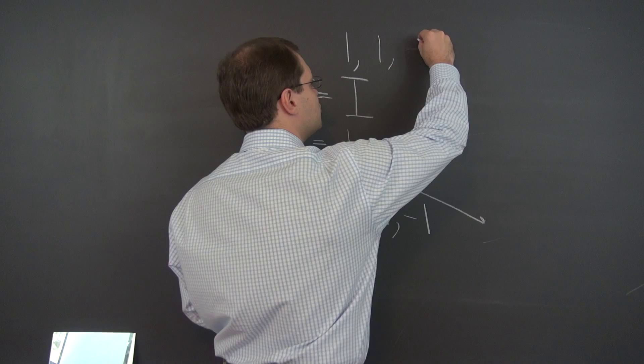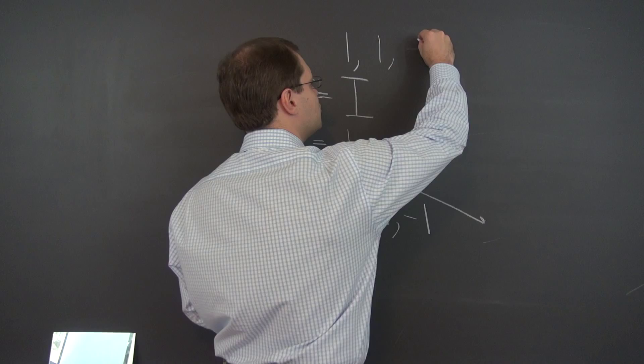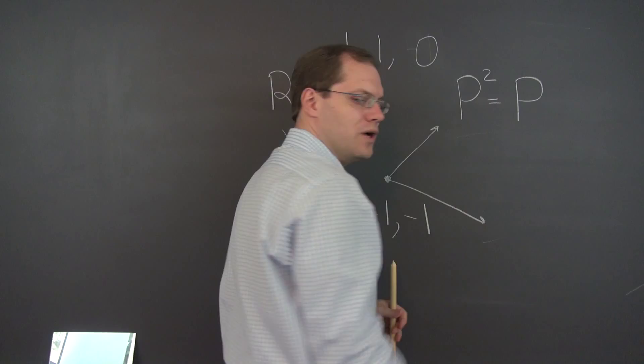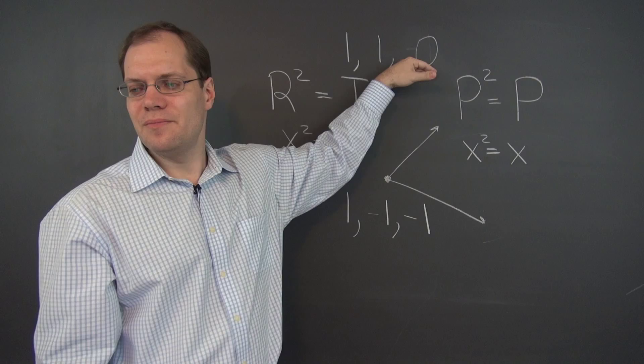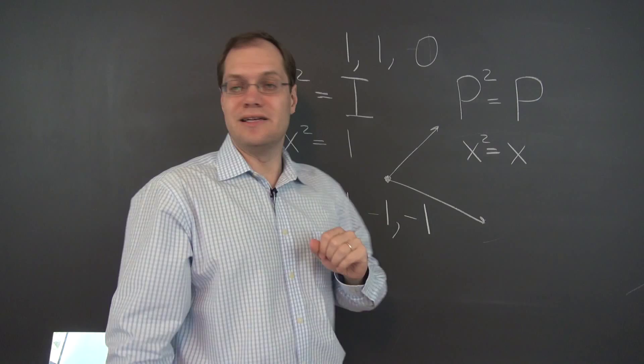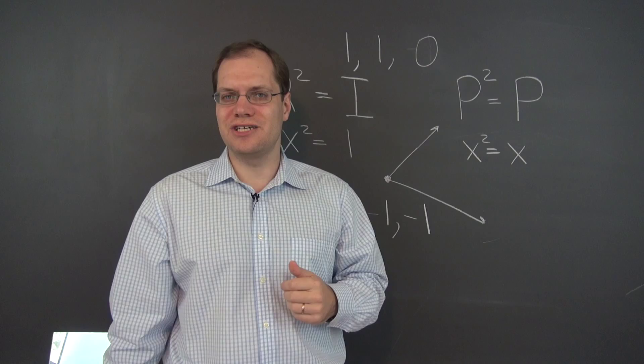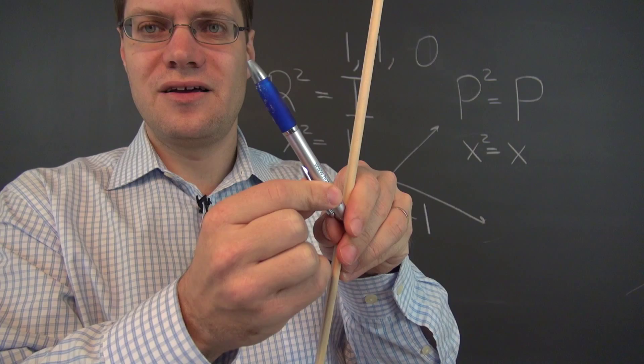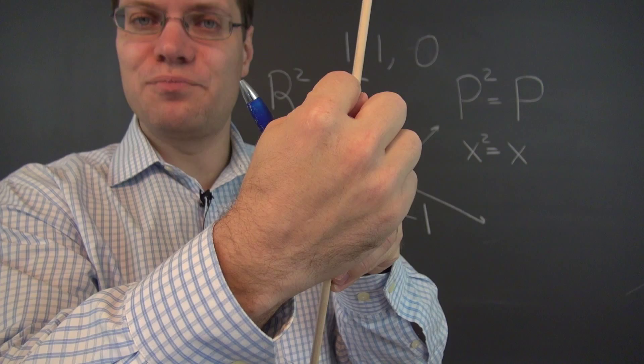The vector perpendicular to the board corresponds to eigenvalue 0, because its projection is the zero vector. This situation is very similar to reflection, except the vector that used to flip now becomes zero. Also, projecting a vector twice is the same as projecting it once. This reminds us of the equation x² = x, which has roots 0 and 1 — the same as the eigenvalues of our linear transformation. This completes the discussion of projection with respect to a plane.